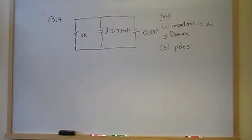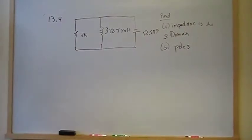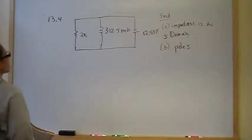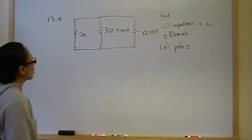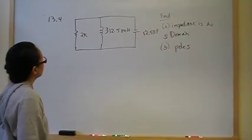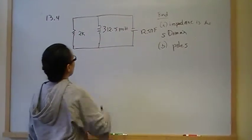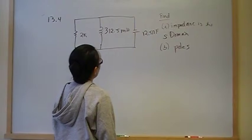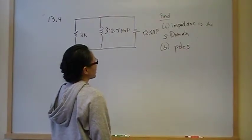This is problem four from chapter 13. The goal of this section is to learn to do circuit analysis in the S domain. We have a parallel RLC circuit with no power supply — a 2K resistor in parallel with a 3.125 millihenry inductor and a 12.5 nanofarad capacitor.